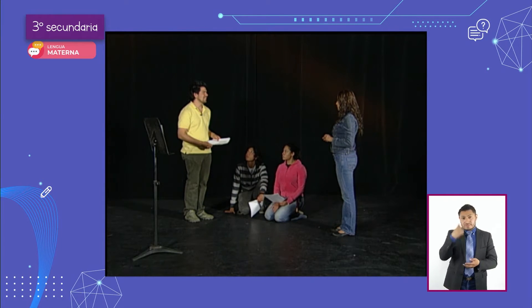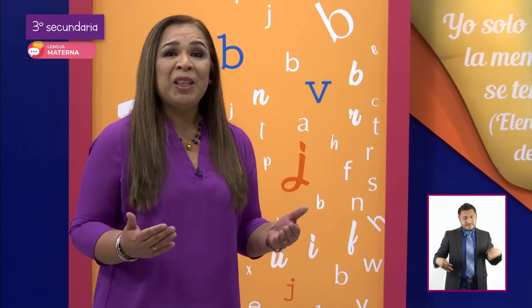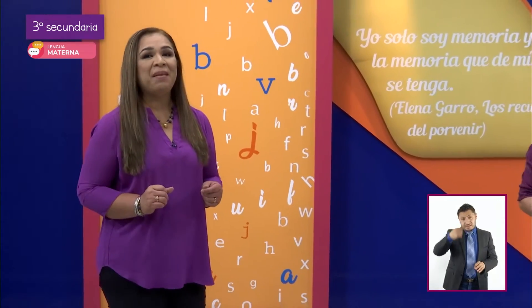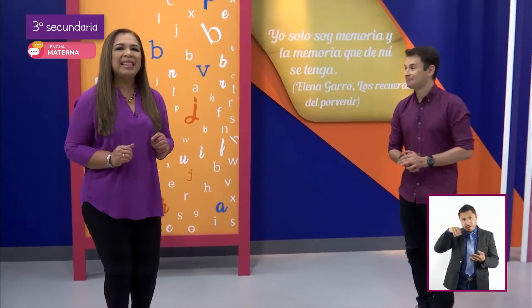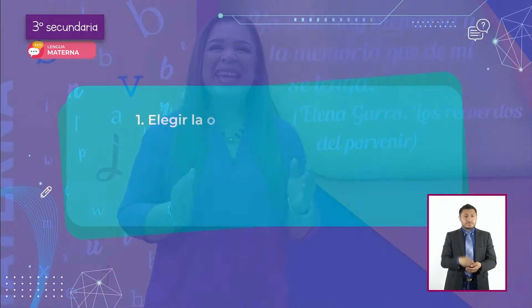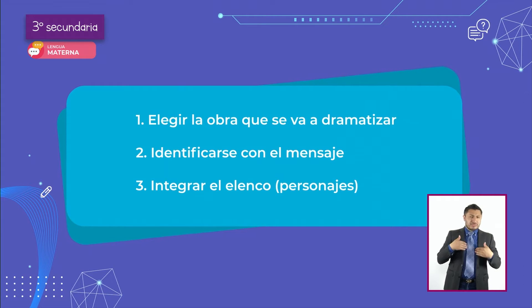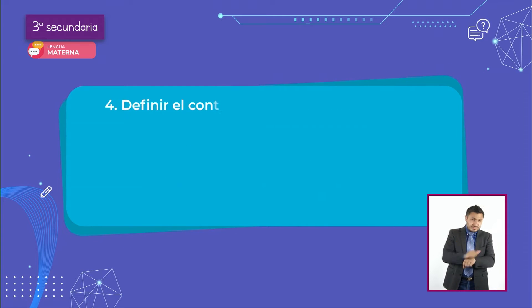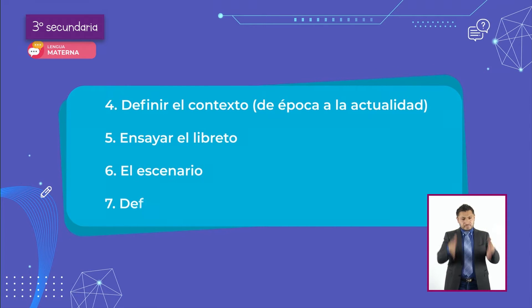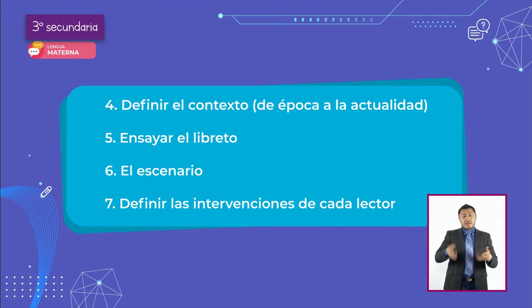Y pues de ahí lo que sigue es entender el papel, leerlo y echarle todas las ganas. ¡Qué interesante conocer en voz de quienes hacen teatro los aspectos que se deben considerar para planear la lectura dramatizada! Repasemos lo que debemos considerar: uno, elegir la obra que se va a dramatizar; dos, identificarse con el mensaje; tres, integrar el elenco y personajes; cuatro, definir el contexto de época a la actualidad; cinco, ensayar el libreto; seis, el escenario; siete, definir las intervenciones de cada lector.